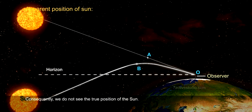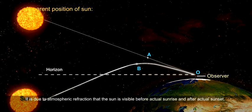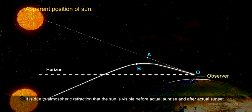Consequently, we do not see the true position of the sun. It is due to atmospheric refraction that the sun is visible before actual sunrise and after actual sunset.